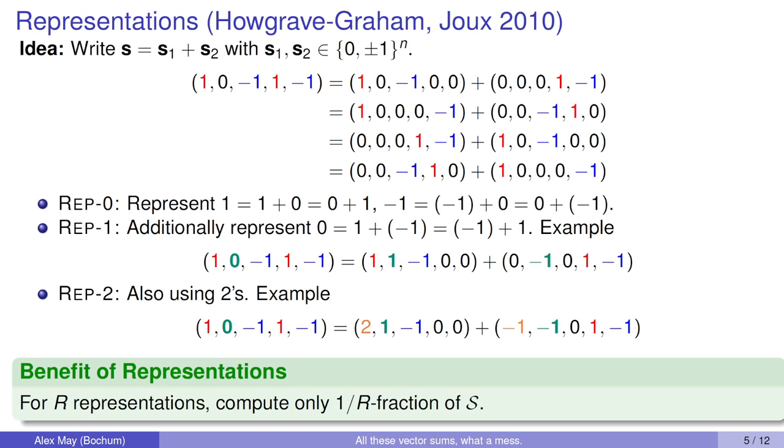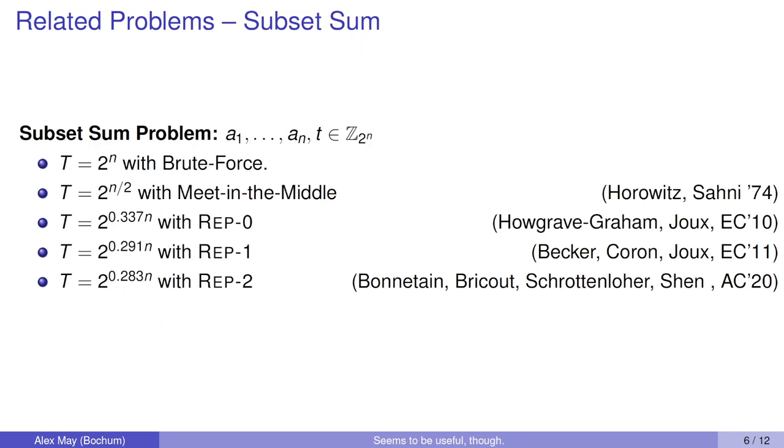Why is that? Let's look at our four representations above. No matter which one of these we construct, they are all equally good because they all sum to the right target vector S. That's already the magic of the representation technique, which was used heavily to improve the subset sum type problems.